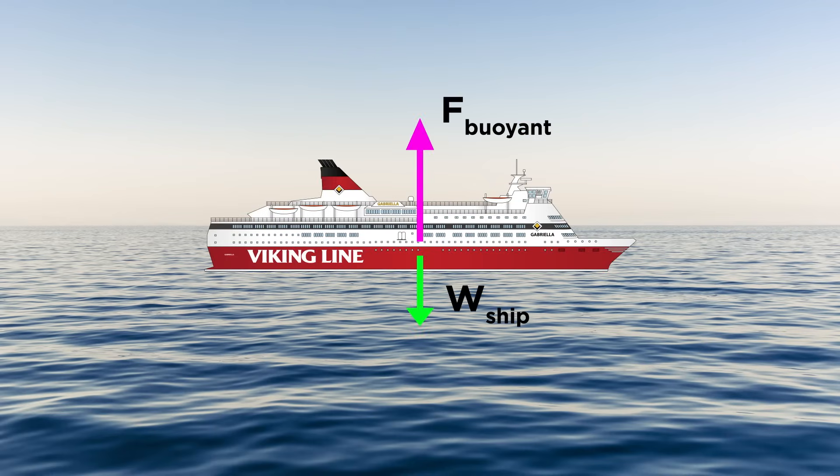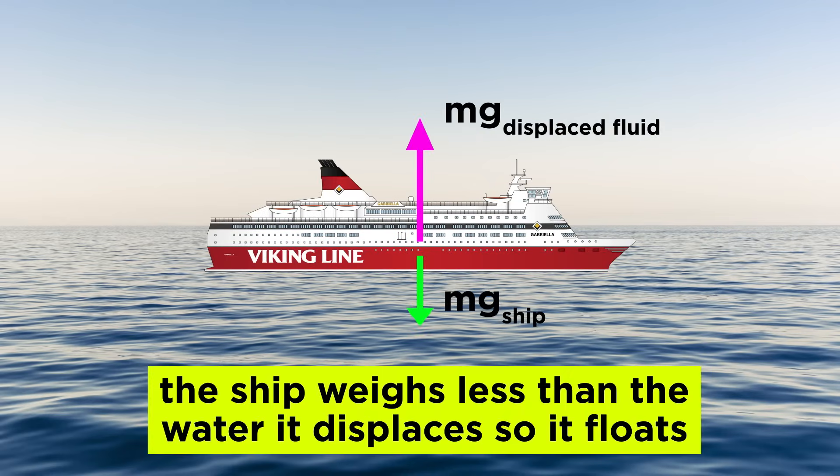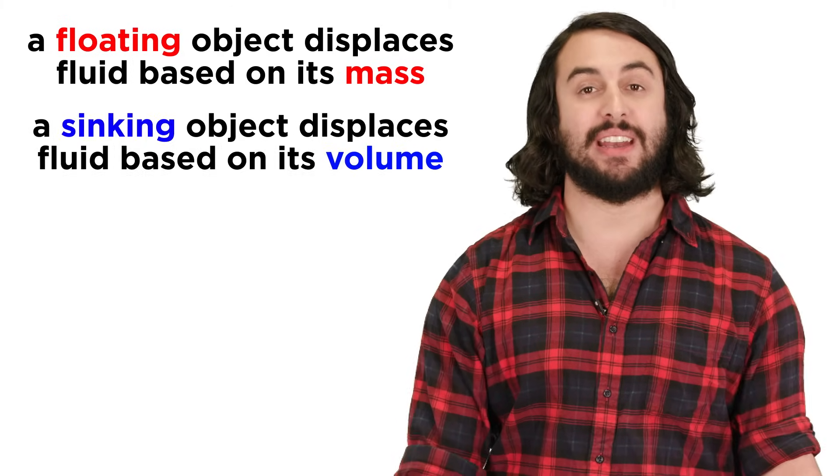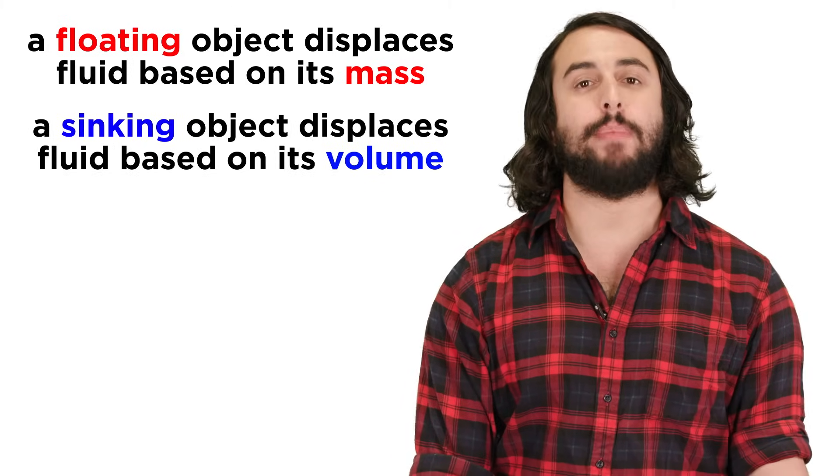In this way the buoyant force can be expressed as the gravitational force of the displaced fluid, which is equal to the mass of the displaced fluid times acceleration due to gravity. A floating object displaces fluid based on its mass, and a sinking object displaces fluid based on its volume.